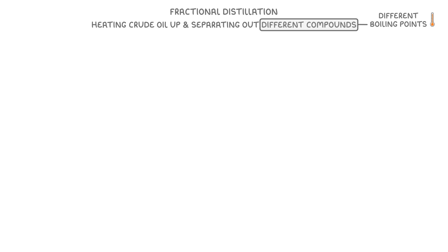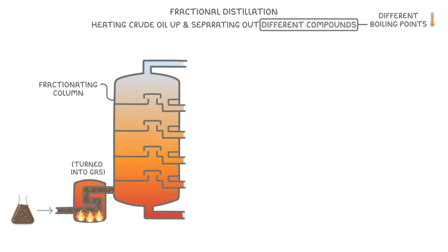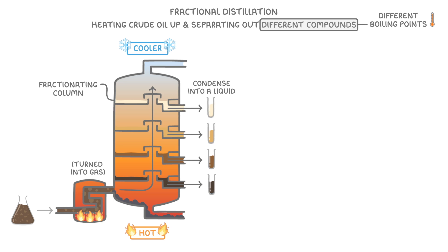The first step is to feed the oil into a chamber and heat it until most of it has turned into a gas. We then pass this gaseous mixture into a fractionating column, which is really hot at the bottom but gets cooler towards the top. The idea is that these hot gases will then start to rise up the column, and as soon as they reach a region that has a lower temperature than their boiling point, they'll condense into a liquid.